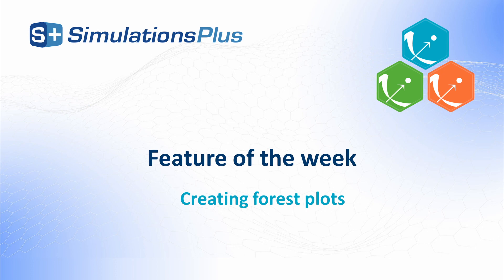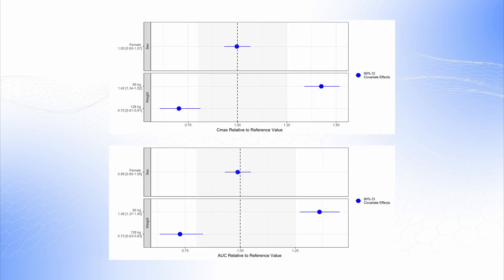Hello and welcome to the Feature of the Week. In today's video, we will show you how to use Monolix and Simulix to represent the effect of covariates on the exposure parameters using forest plots, like this one shown here. We can use this type of forest plot to illustrate the effect of covariates on the probability of a typical subject's exposure being inside or outside a specific interval of values.